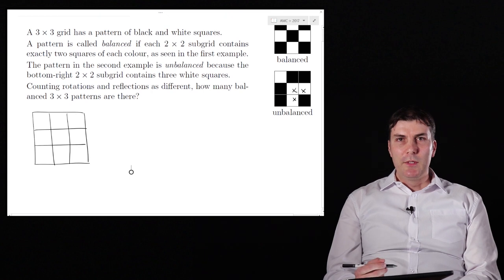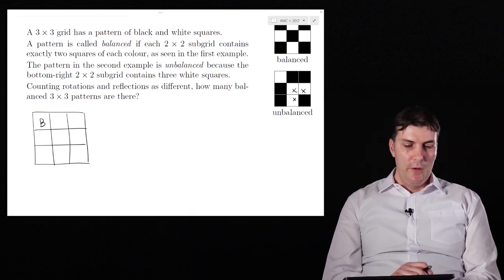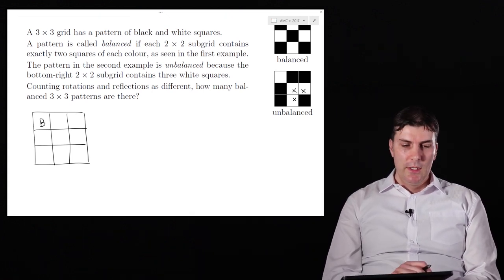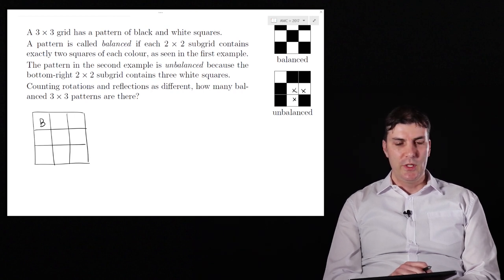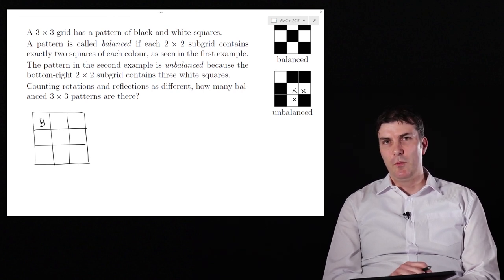Well, let's just start putting some colors in and see what happens. Let's start with the black in the top left hand corner. If you think about it, if we started with white instead, then I could just switch all the colors throughout the whole thing and I'd end up with the same number of arrangements. So maybe we should only count the ones with black and then double the answer at the end, and that's our first key step.